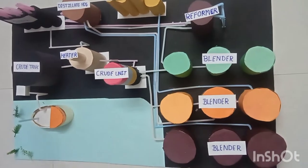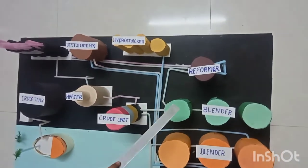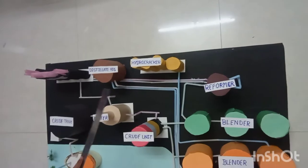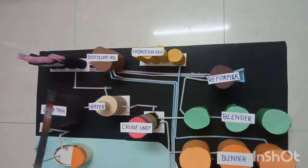Reformer. Naphta is obtained here. The next one is hydrocracker. Hydrocracker uses hydrogen gas to break down crude oil into molecules.